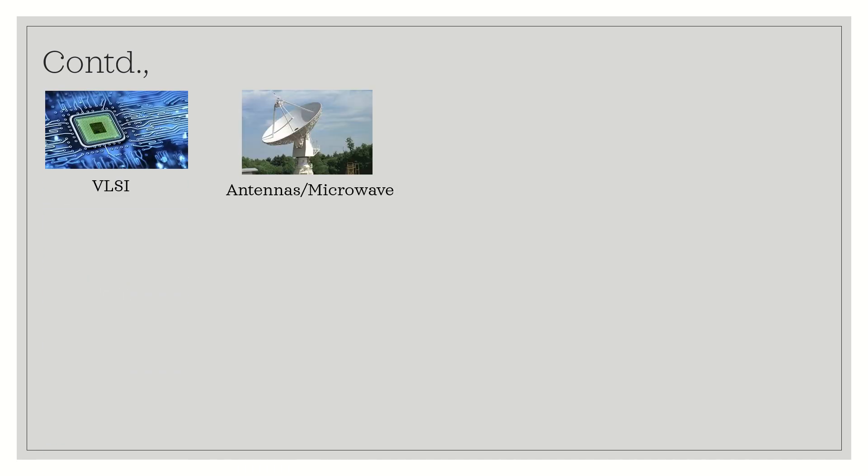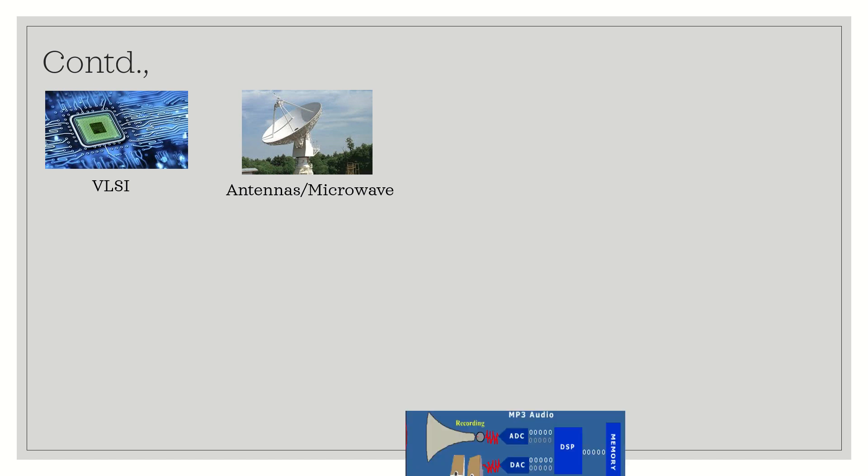VLSI — Very Large Scale Integration — covers how chips and ICs are made and what techniques are used in their manufacture. One of the very important subjects in ECE is antennas and microwave engineering, covering how antennas are built, what types are available, which to use, and how microwave engineering is applied.